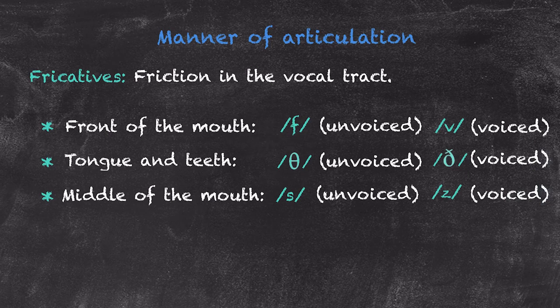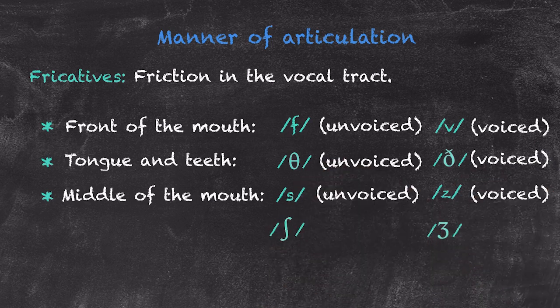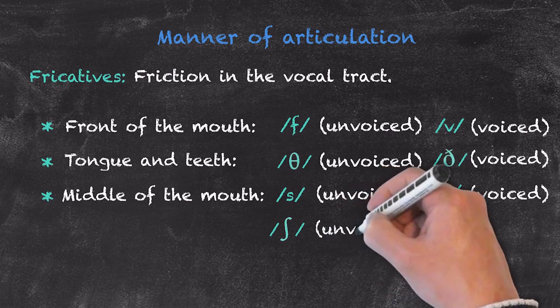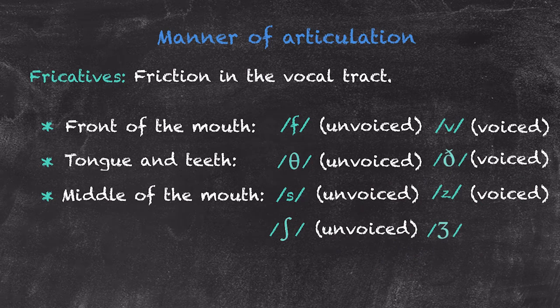Our second set of sounds within this part of our vocal tract are SH and Z. Again, very similar sounds, same place, same manner of articulation. The only difference is that one is voiced while the other is not. The unvoiced SH and the voiced Z.